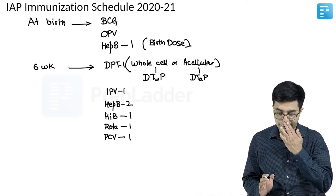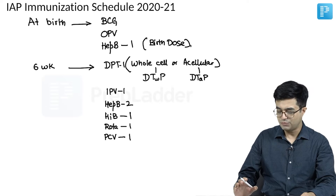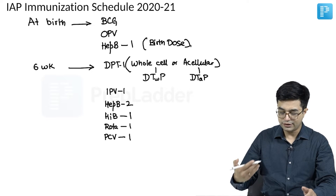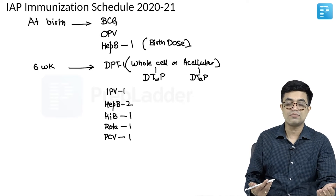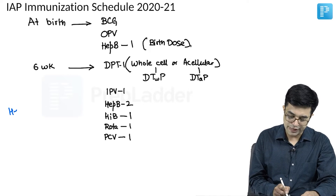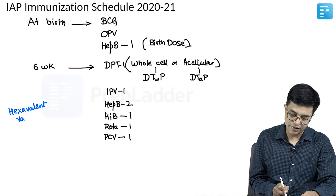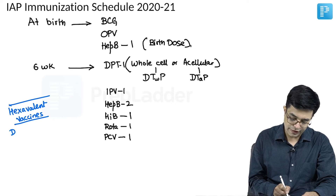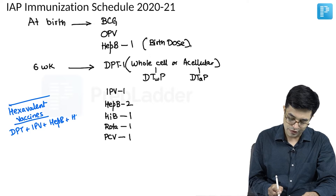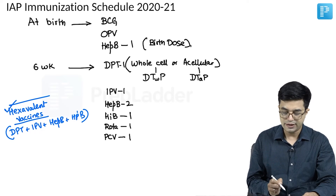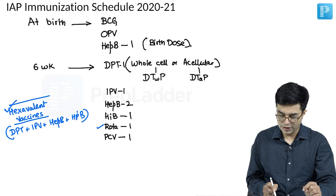The IAP schedule lists DPT1, IPV1, and hepatitis B2 separately. In practice, you can use all of them singularly, but that increases the number of injections significantly. In practice, hexavalent vaccines are available — though costly — and are easier to administer because they combine DPT, IPV, hepatitis B, and Hib into one vaccine, covering six diseases. In addition, you give rotavirus 1 and PCV 1.